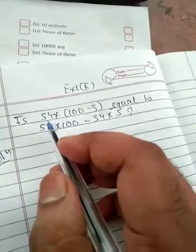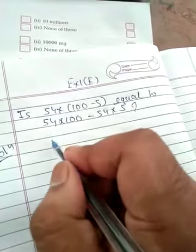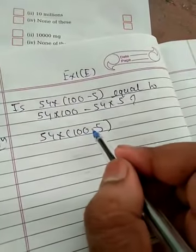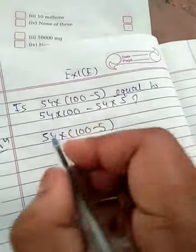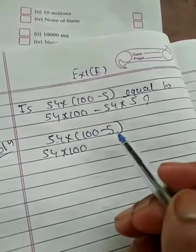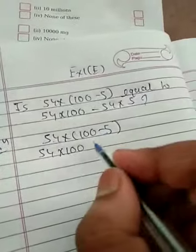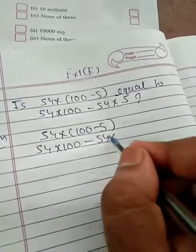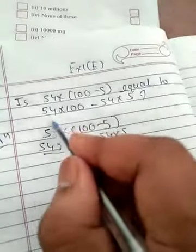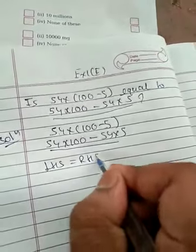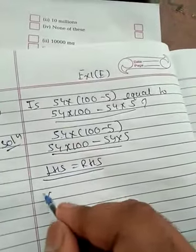First we will take LHS, means left hand side, which is 54 × (100 − 5). According to BODMAS rule, first we simplify the bracket. Now 54 × 100 will become 54 × 100. When you multiply a positive integer into a negative integer, we will always get our answer with a negative sign. It will become −54 × 5. We can see this number and this number are the same, so we can say LHS is equal to RHS, and our answer will be yes.